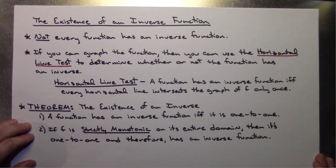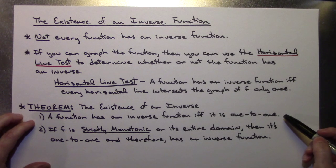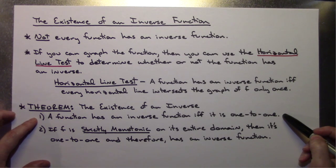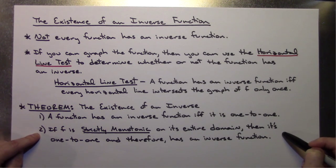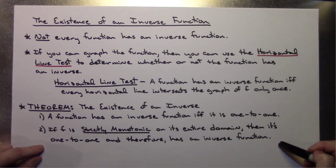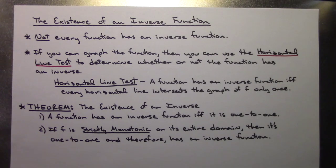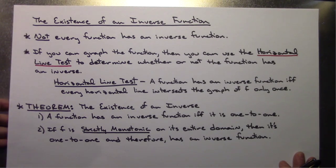There is also a theorem about the existence of an inverse. The first part states that a function has an inverse if and only if it is one-to-one. The second part says that if F is strictly monotonic on its entire domain, then it is one-to-one and therefore has an inverse function. These are facts about inverse functions you should recall before working with them.